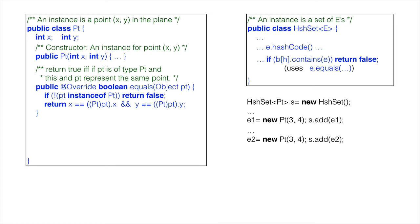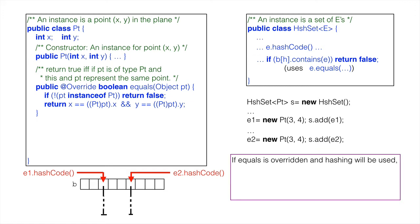e1 and e2 are different objects at different places in memory, so they may hash to different buckets. This means that e1 may be added to one bucket and e2 to another. Clearly, we must ensure that equal objects hash to the same integer. If e1.equals(e2), then e1.hashCode() equals e2.hashCode().